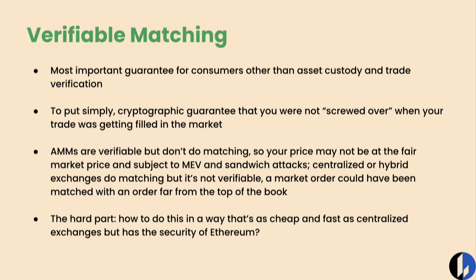As an example, AMMs are verifiable but they don't actually do matching. What happens is cryptographically verified, but the price you get may not be the fair market price — it's subject to MEV, sandwich attacks, and so on. Centralized or hybrid exchanges do matching, but not in a way that's verifiable. If you send a market order, you don't really know that it was matched at the top of the book in the priority you sent it; it could have been matched somewhere else and you might be getting a price that's not fair without even knowing it. The hard part is: how do you do this in a way that's as cheap and fast as centralized exchanges, yet has the security of Ethereum? That's what we've been working on with ZK Lighter.